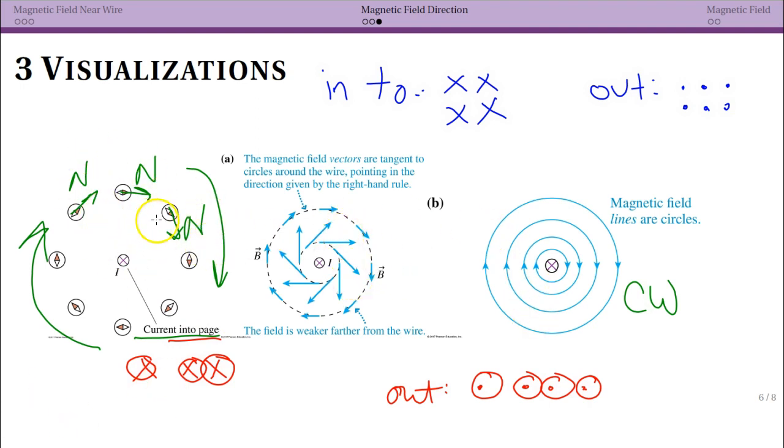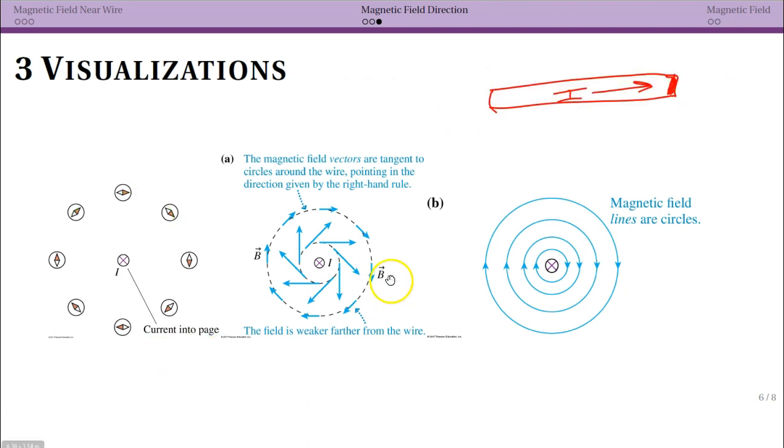So this is one way to do the visualization. Again, we can do the compasses. We typically don't draw those. And then you can do vectors or field lines or actually combine them together. Since these are all a view of the magnetic field very clearly, face-on, but we're looking down the current, I want to do an example where we see the side of the wire, which means we're actually looking at the magnetic field edge-on.